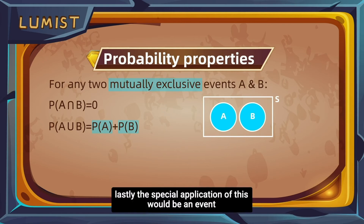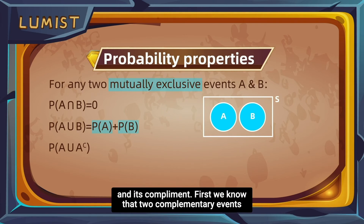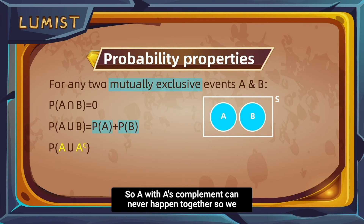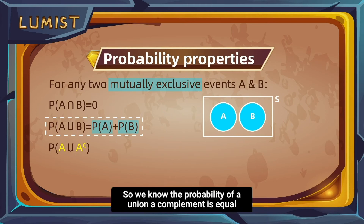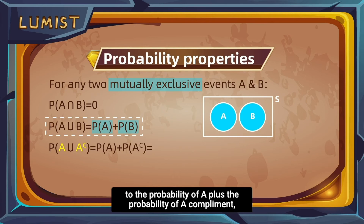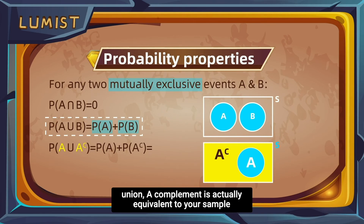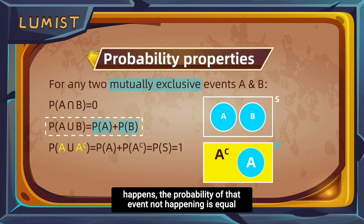A special application is an event and its complement. Two complementary events are mutually exclusive — A and its complement cannot happen together — so we can use the union formula directly. The probability of A union A-complement equals P(A) plus P(A-complement). Since either A happens or it doesn't, A union A-complement is equivalent to the sample space, which has probability 1. Therefore, the probability of A-complement equals 1 minus P(A).